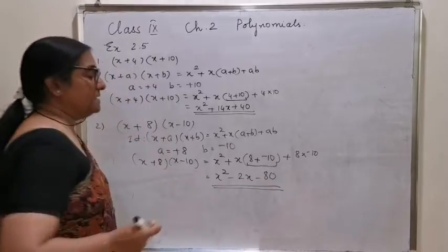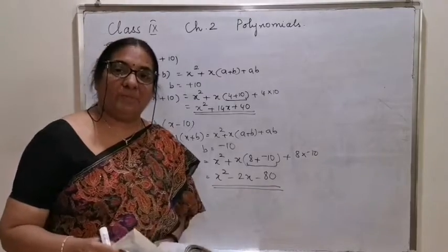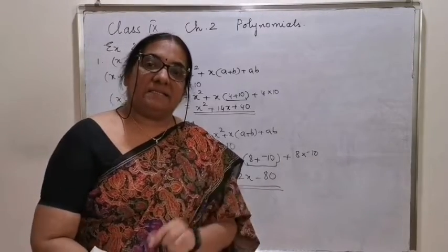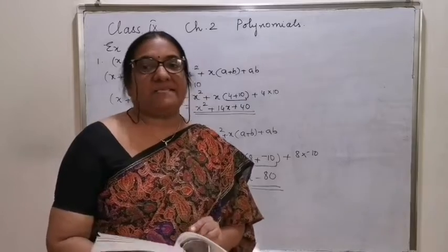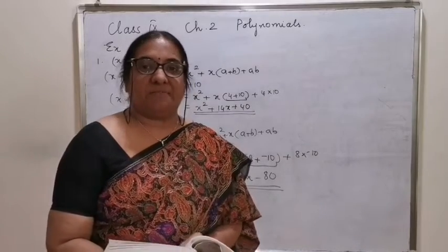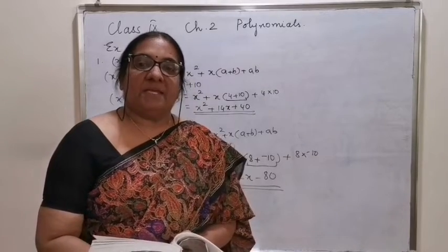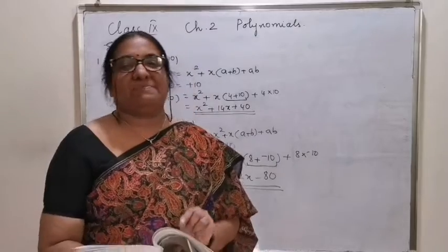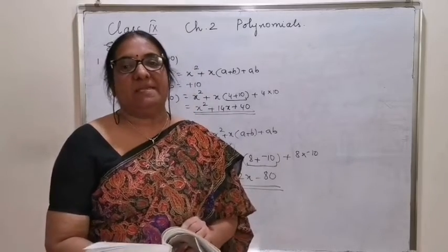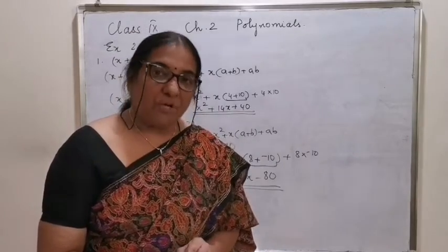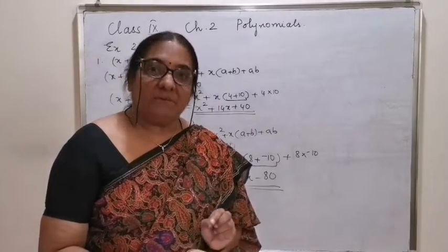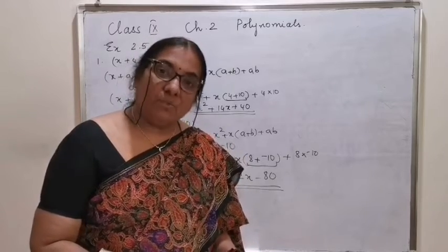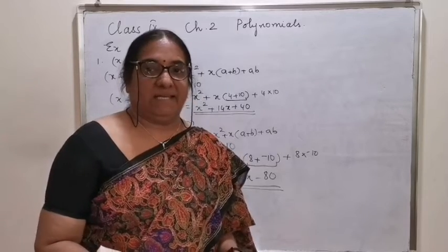This is how you will do the problems. Since the general form is x plus a into x plus b is equal to x square plus x into a plus b plus ab, when you work out the problems, a and b you write with the same sign.